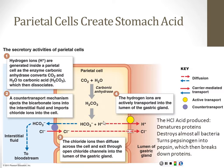We call this a proton pump because H⁺ is a proton. Many medications used today to treat heartburn and gastroesophageal reflux disease fall into the category of PPI — proton pump inhibitor. They inhibit this protein. Prilosec or Prevacid, for example, work by blocking this pump. If protons aren't pumped out, the stomach is less acidic because less acid has been pumped into it.